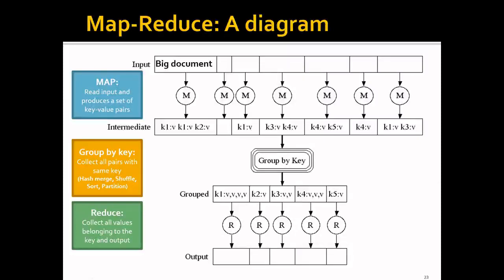As a recap, let's look at this figure. Usually a MapReduce task is split into three steps. The first step is the map function, which will read the input and produce a set of key-value pairs. For example, it will read this chunk of documents and produce a set of intermediate key-value pairs: k1, k2, etc.